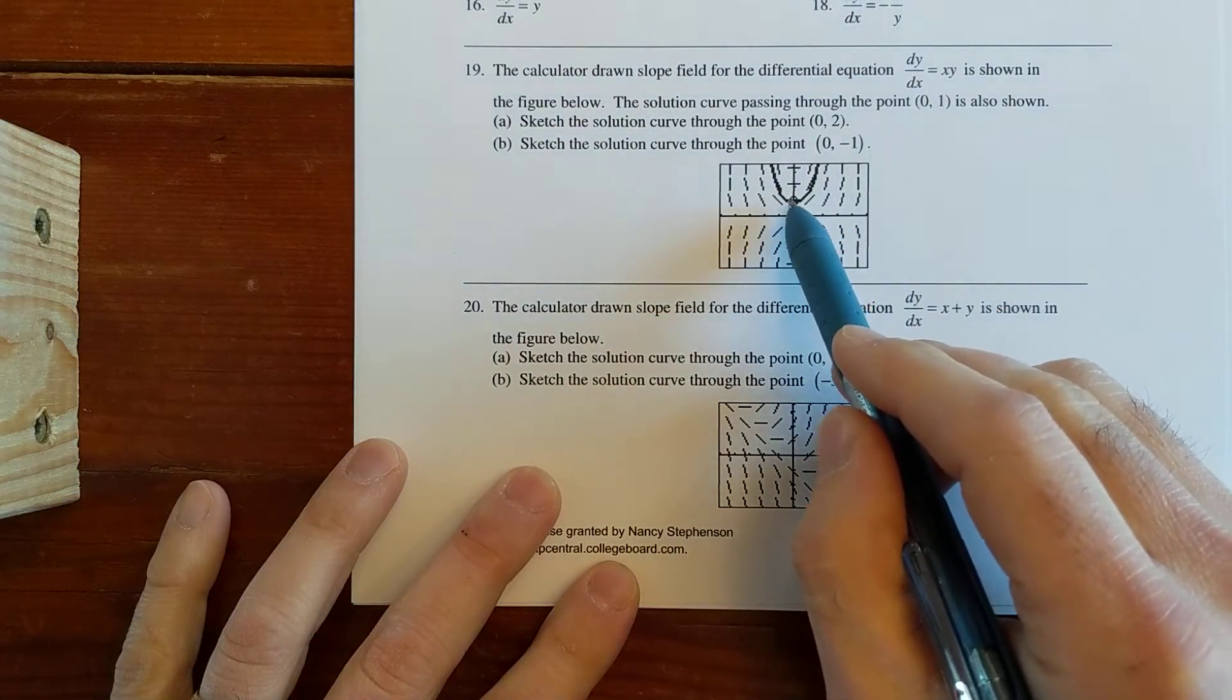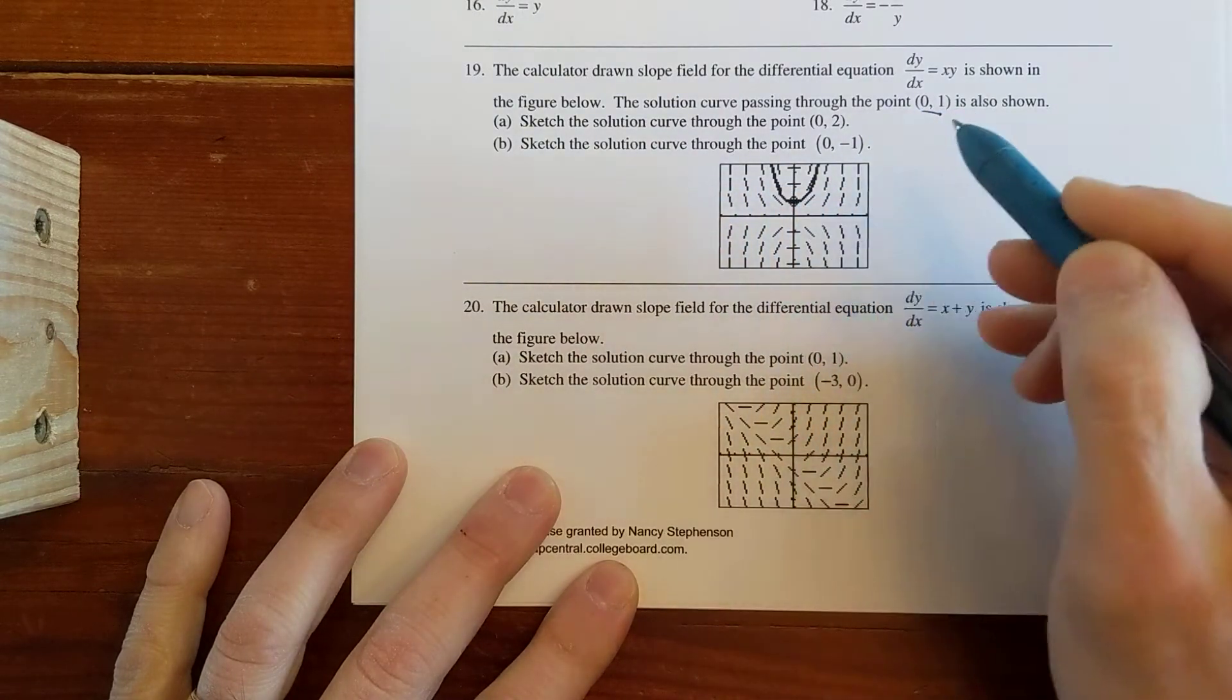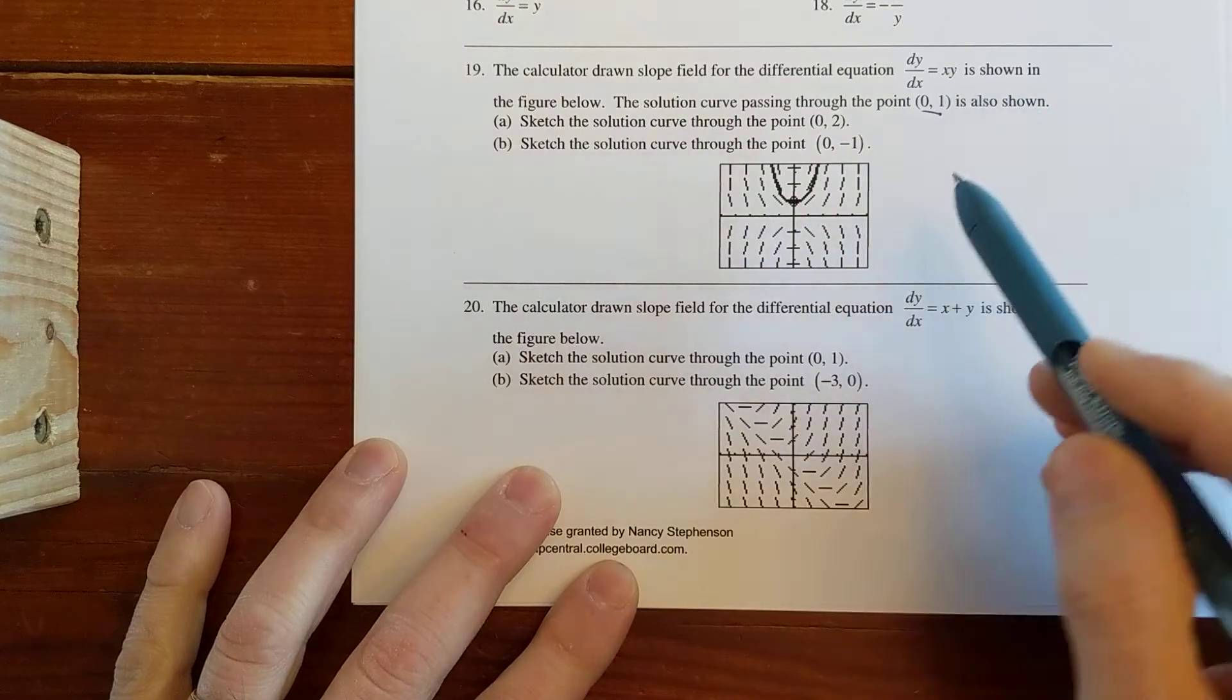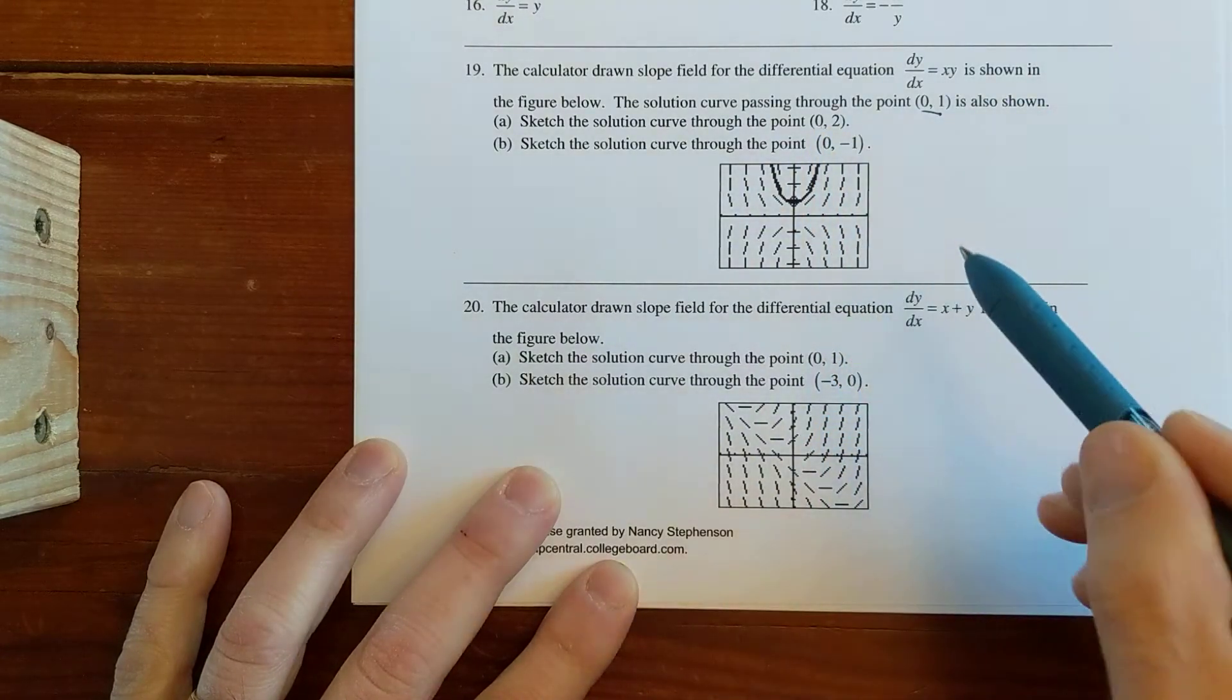I think just as an example, they drew you one solution curve right here through the point (0,1), which is right here. The two things they want us to do would be to draw a solution curve passing through (0,2) and then (0,-1).